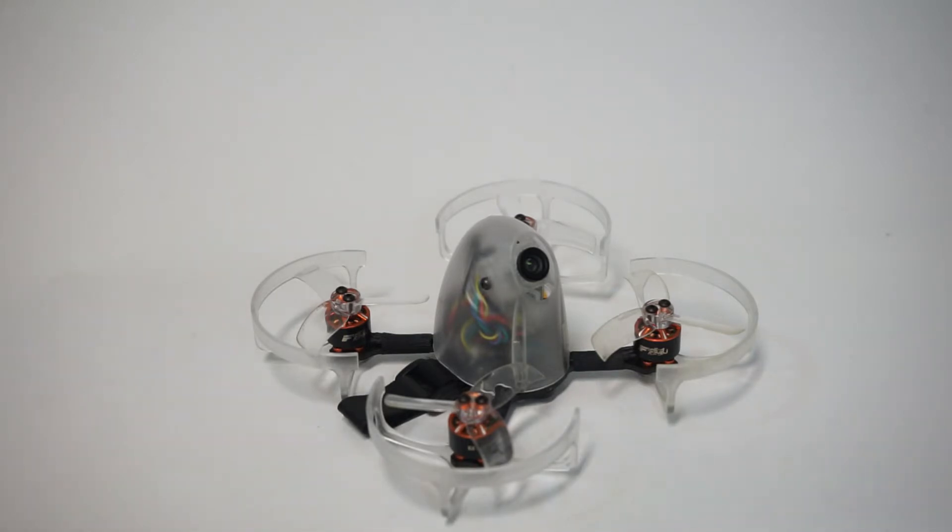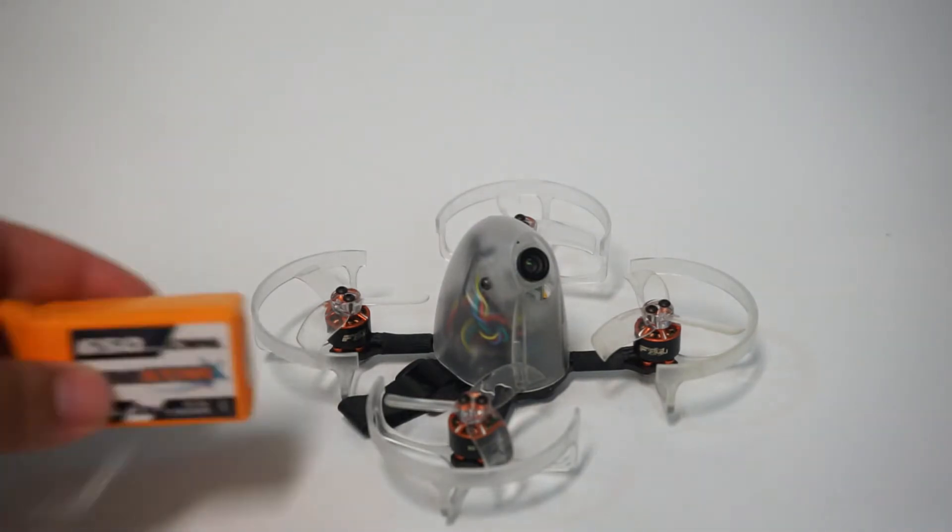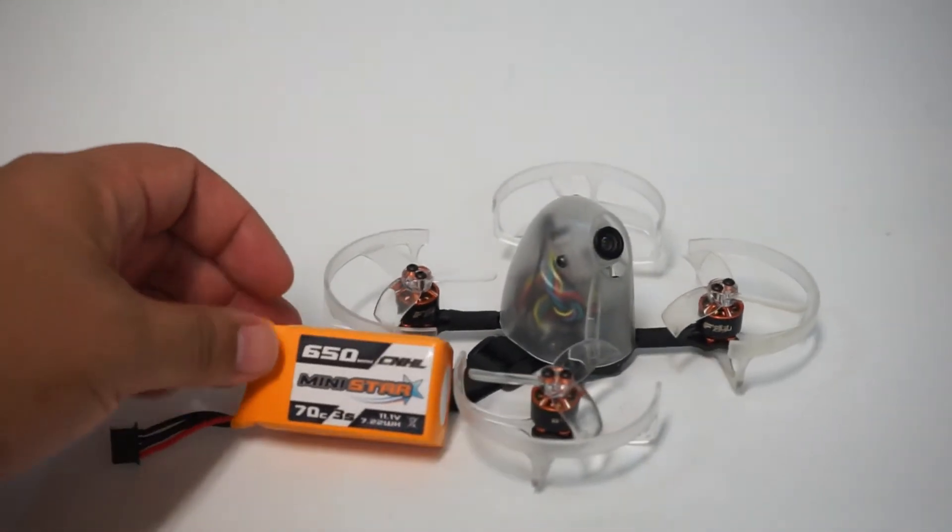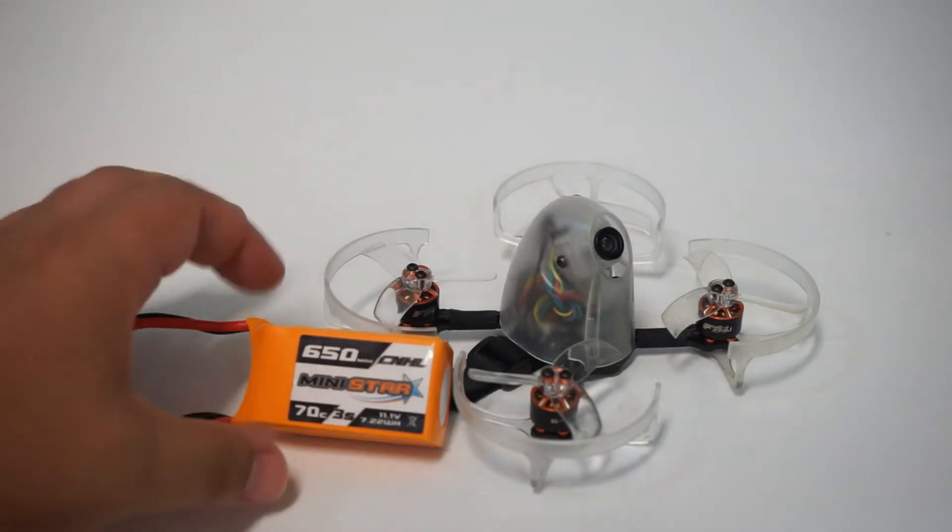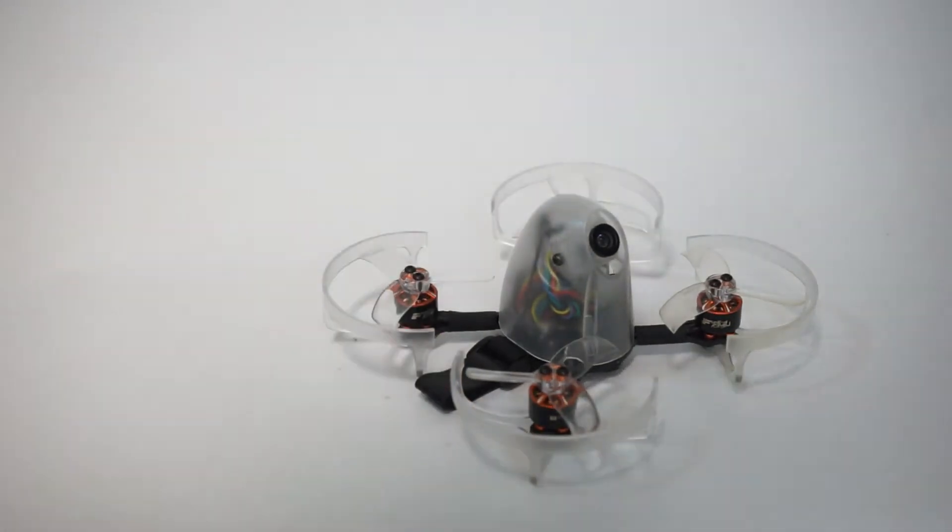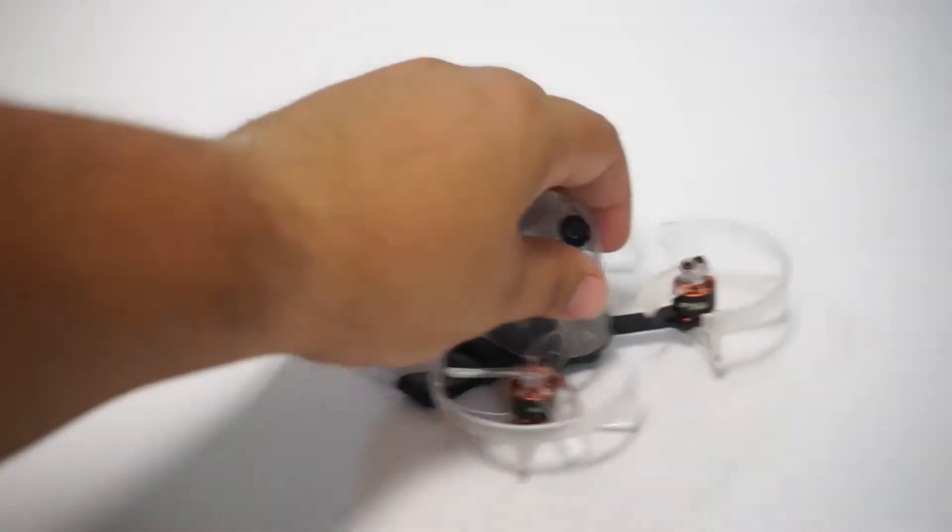Now I have done both of those. I've run the 2S tattoo packs which are 650 milliamp and I've also run this 3S CNHL mini star 3S pack and I can tell you that this is not going to be a screamer.